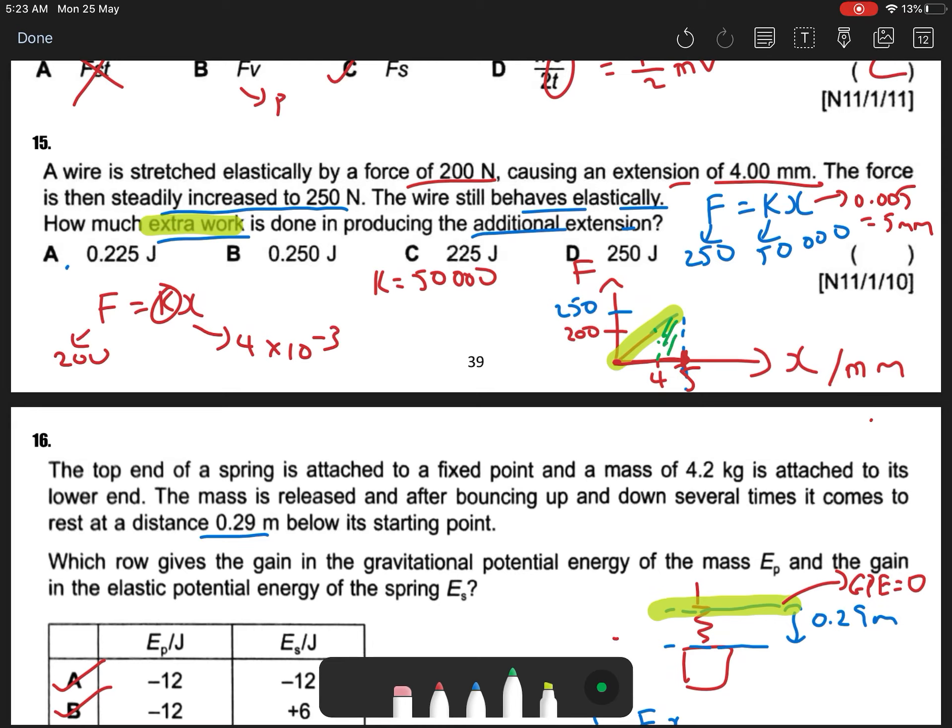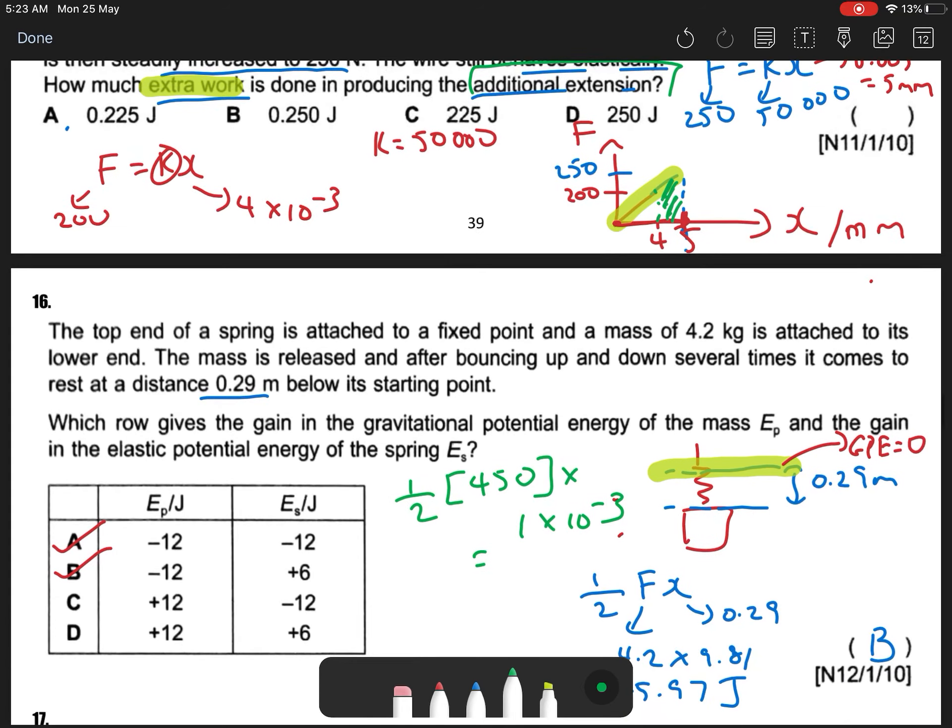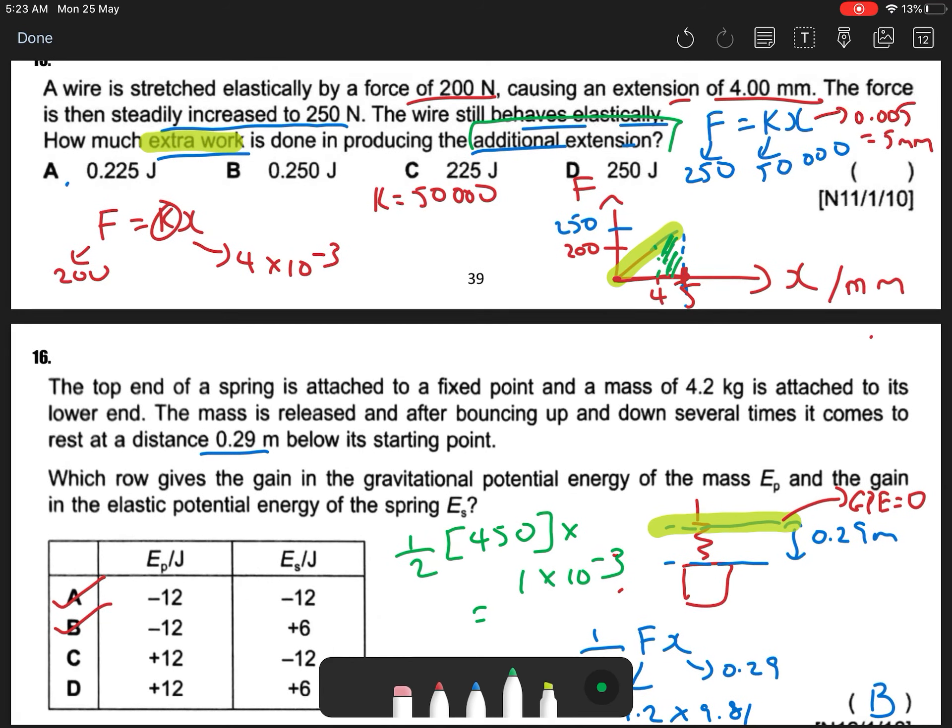So what is my area under the graph? I'll tell you what is the extra work done in producing the additional extension. So what is my area under the trapezium graph? First of all, I'm going to write half. This is the trapezium half, 250 plus 200 times 1 times 10 to the negative 3. So I'll say 0.225 J. So that is A.